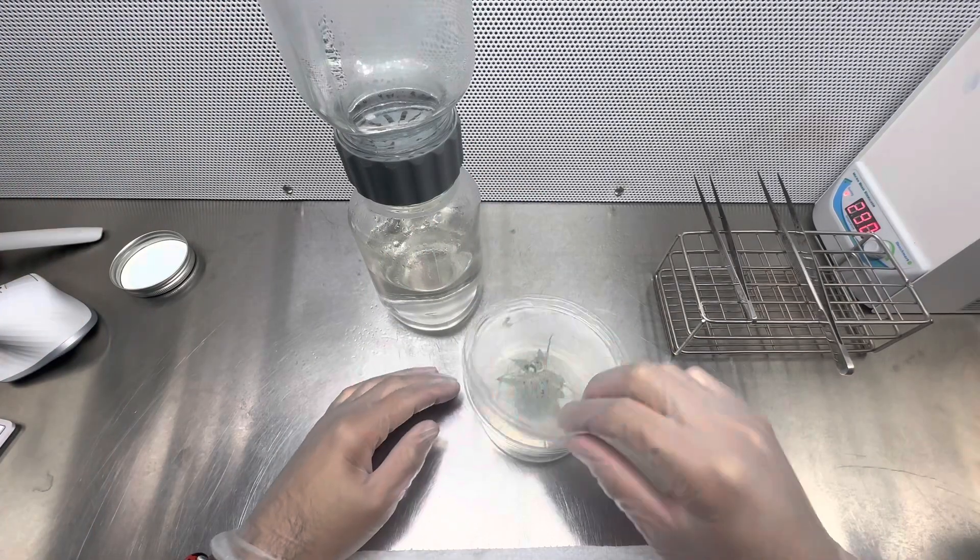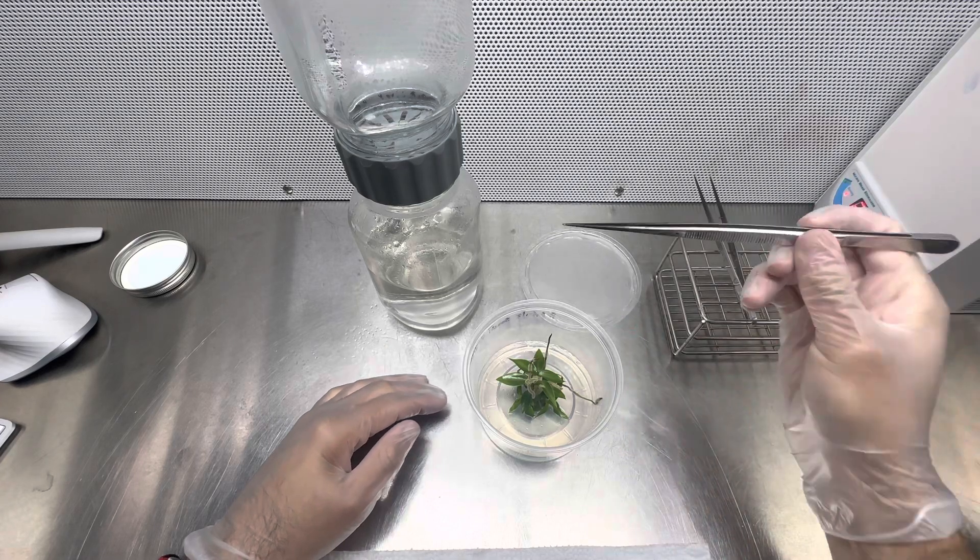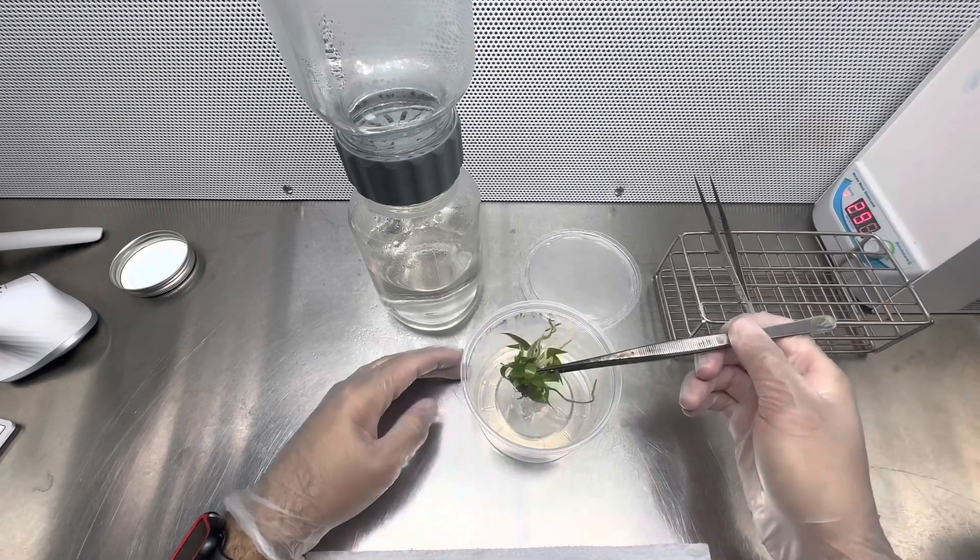Instead, take your sterile forceps and place the plant in the bottom jar with the media. That's going to make it a lot easier, and that's it—it's that simple.